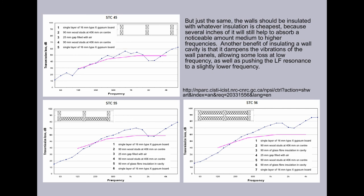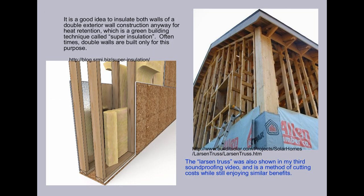Another benefit of insulating a wall cavity is that it dampens the vibrations of the wall panel, allowing some loss at low frequency, as well as pushing the low frequency resonance to a slightly lower frequency. It is a good idea to insulate both walls of a double exterior wall construction anyway for heat retention, which is a green building technique called super insulation.